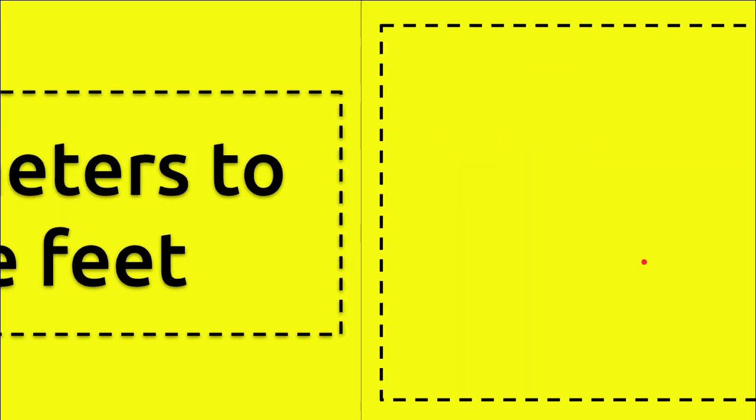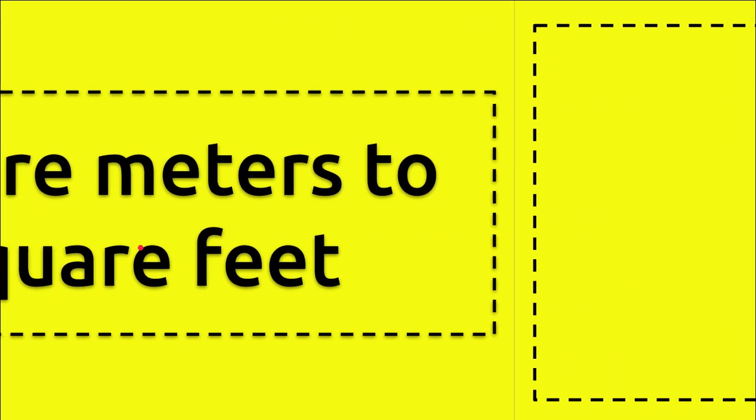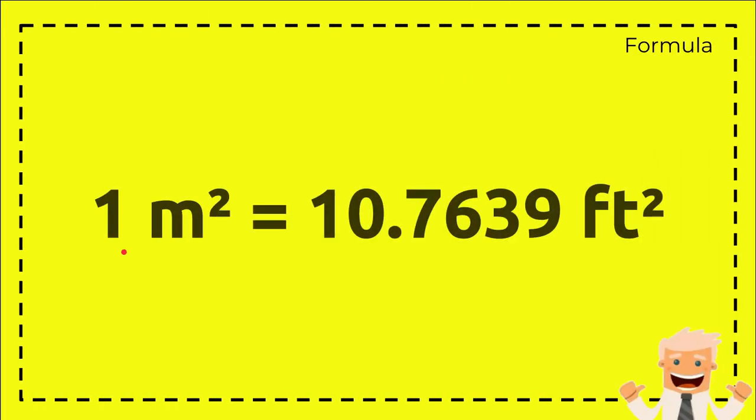Alright, so this is a formula. One square meter equals 10.7639 square feet. That's a formula. We'll use this formula for the answer section.